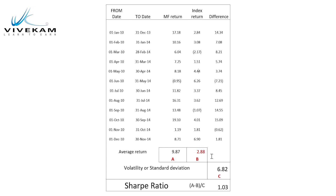And finally, the difference between these two — mutual fund and index return — is also measured, and the volatility of that difference, using the standard deviation formula, is calculated. Please understand it is not the average — the volatility of the difference has come to 6.82. Once you have all these values, you use the formula: average return of the mutual fund minus average return of the index, divided by the volatility of the returns difference — that means divided by 6.82. This gives a Sharpe ratio of 1.03.